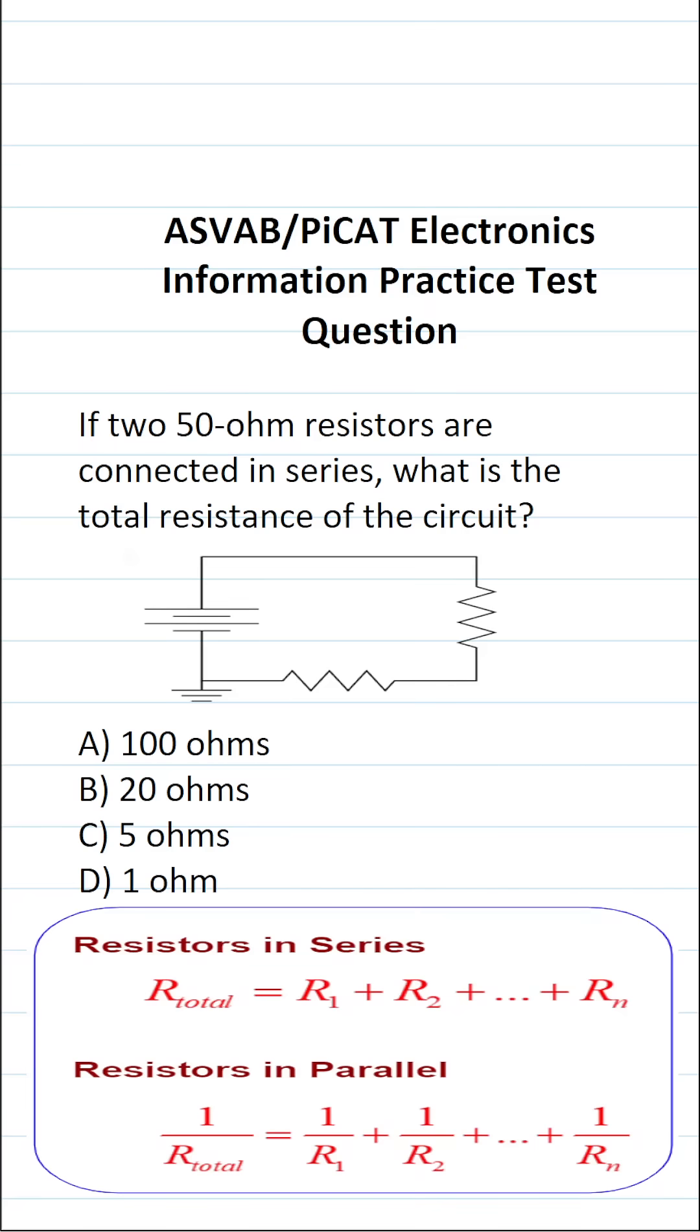This electronics information practice test question for the ASVAB and PyCat says, if two 50 ohm resistors are connected in series, what is the total resistance of the circuit?